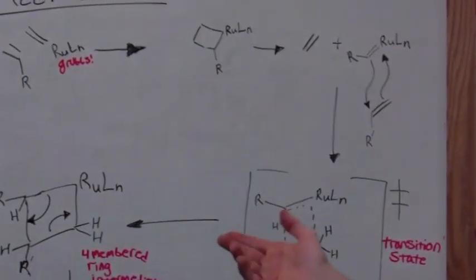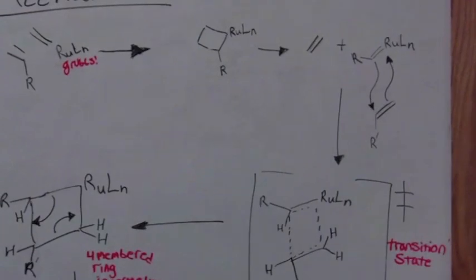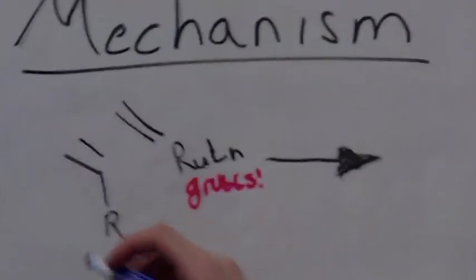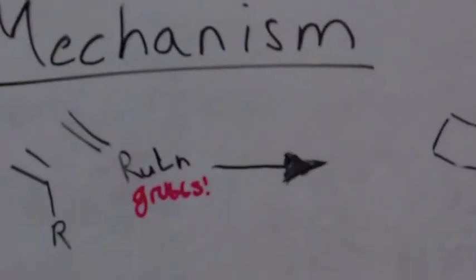Here we have a general mechanism for ethnolysis by olefin cross-metathesis. Now, what you do here is the Grubbs Catalyst and the first reactant, or it could be the second reactant, depending on our choosing, will form a four-membered ring.